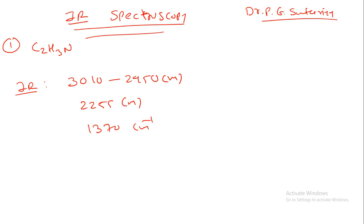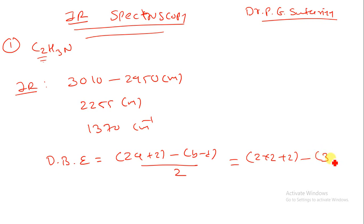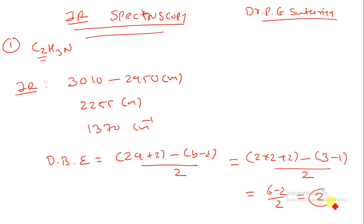You have to find out the structure of this molecular formula. In the first step, find the DBE. The formula for DBE is (2A + 2 + B_nitrogen - B_hydrogen) / 2, which here gives (2×2 + 2 - 3 + 1) / 2. Putting A=2 carbons, B=3 hydrogens, D=1 nitrogen: (6 - 2) / 2 = 4/2 = 2.